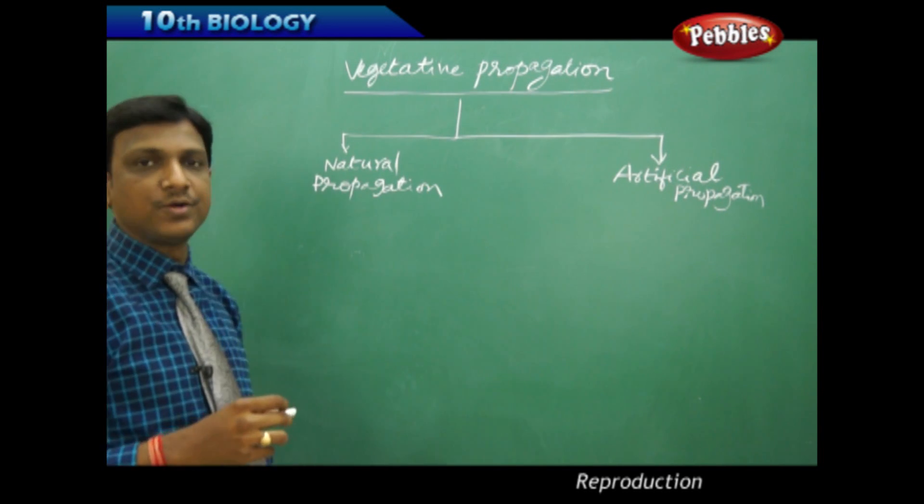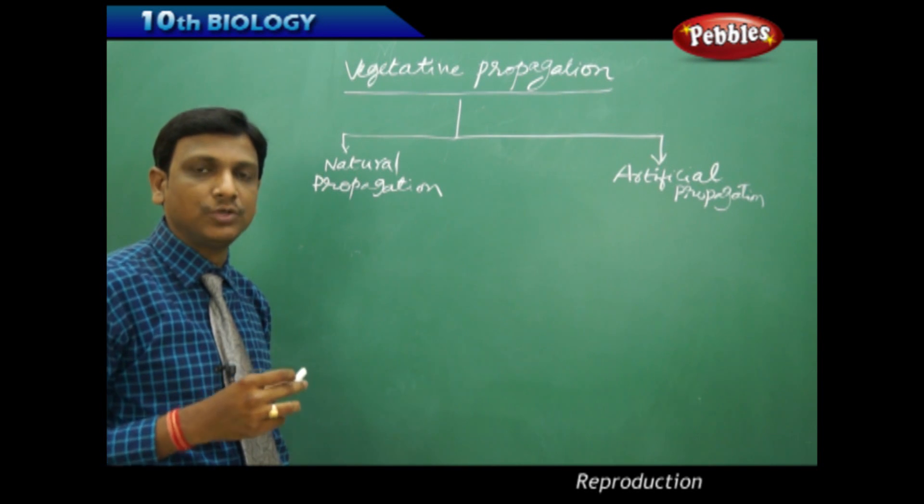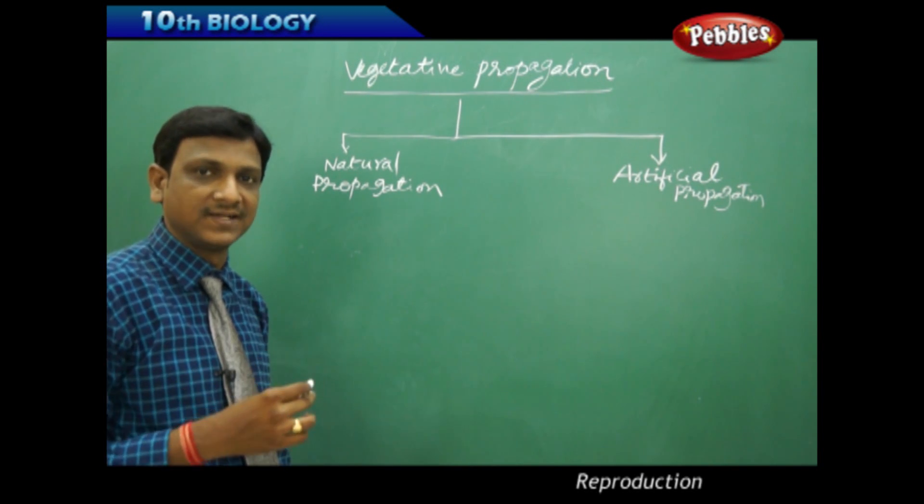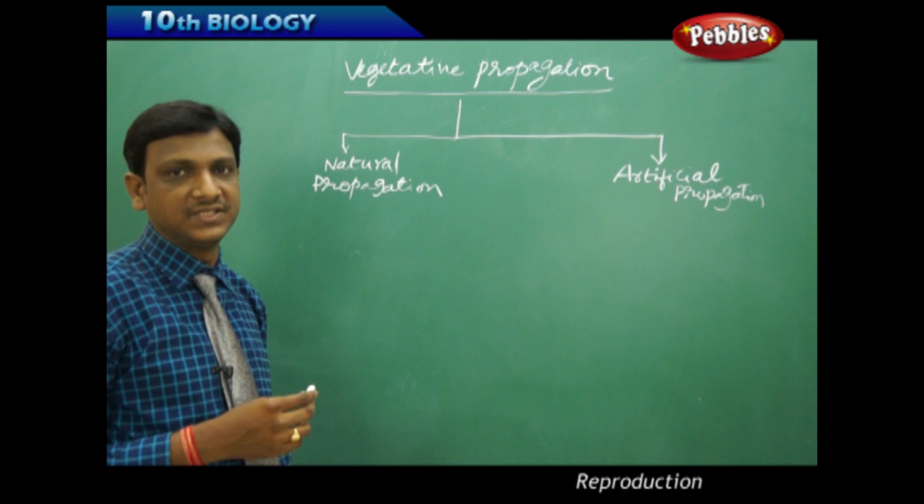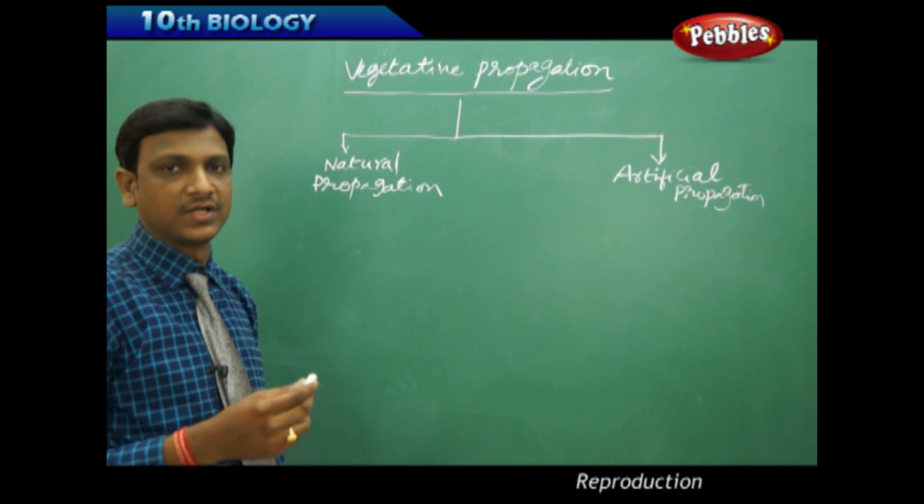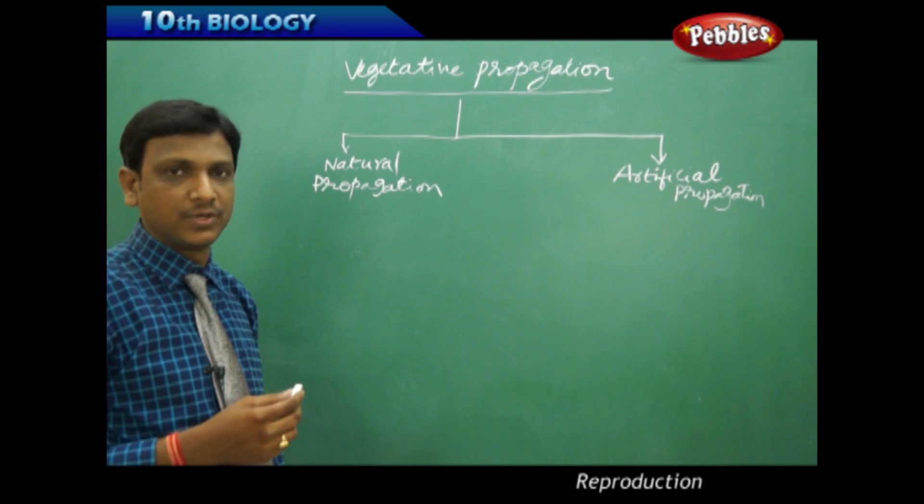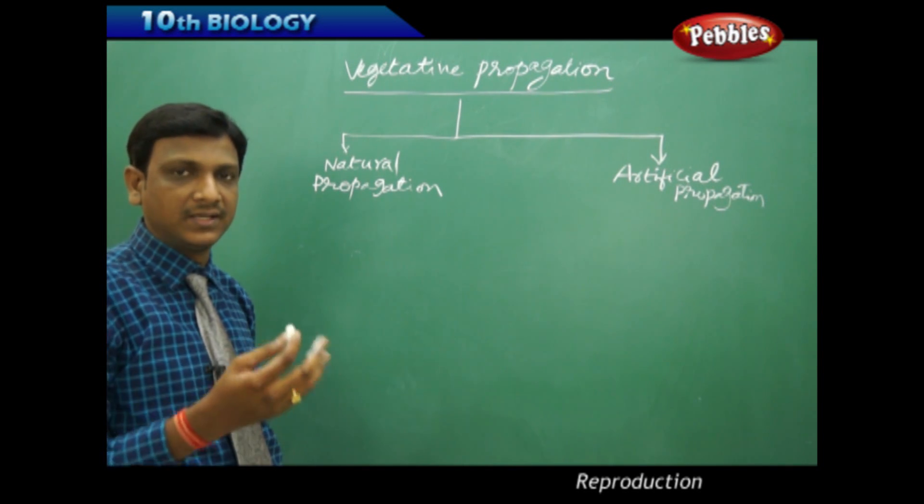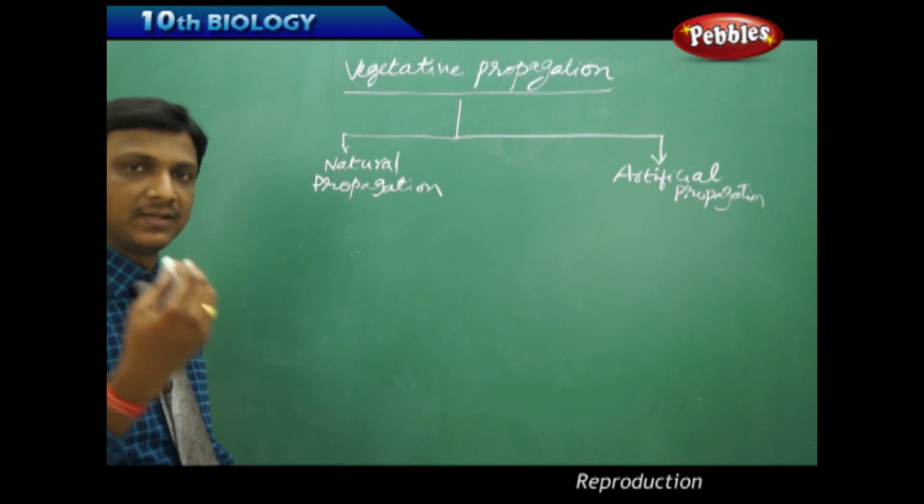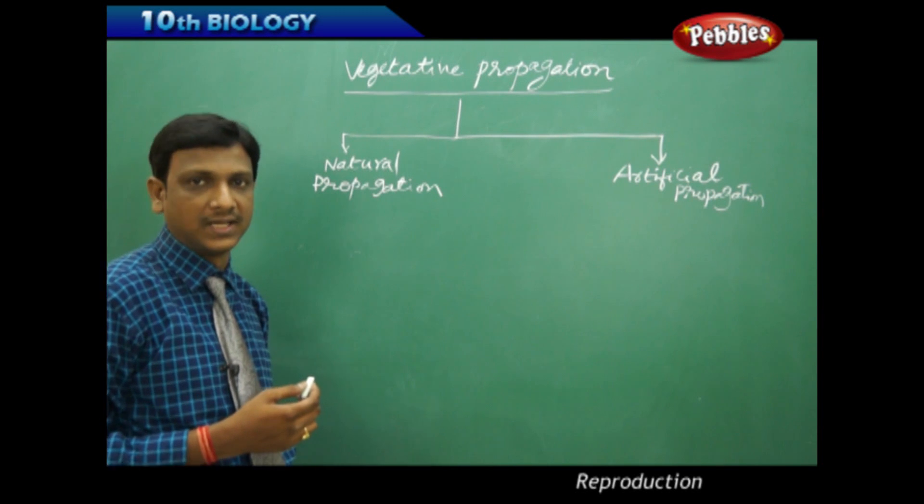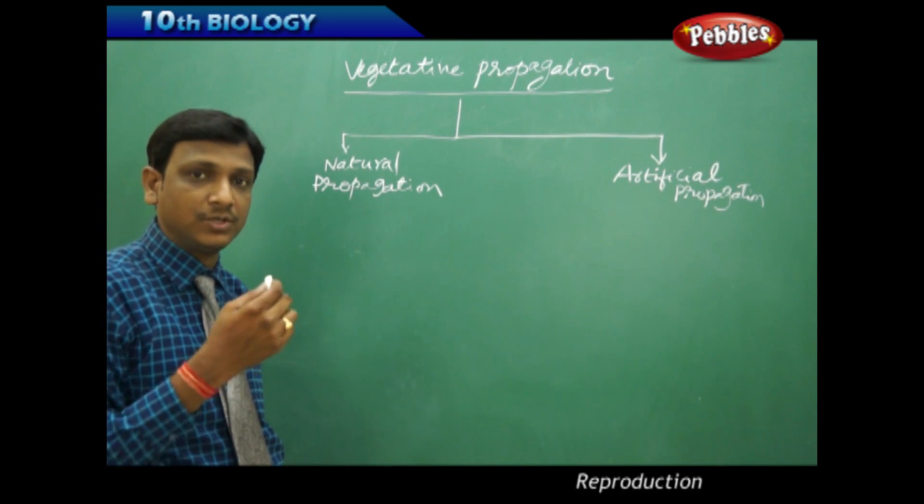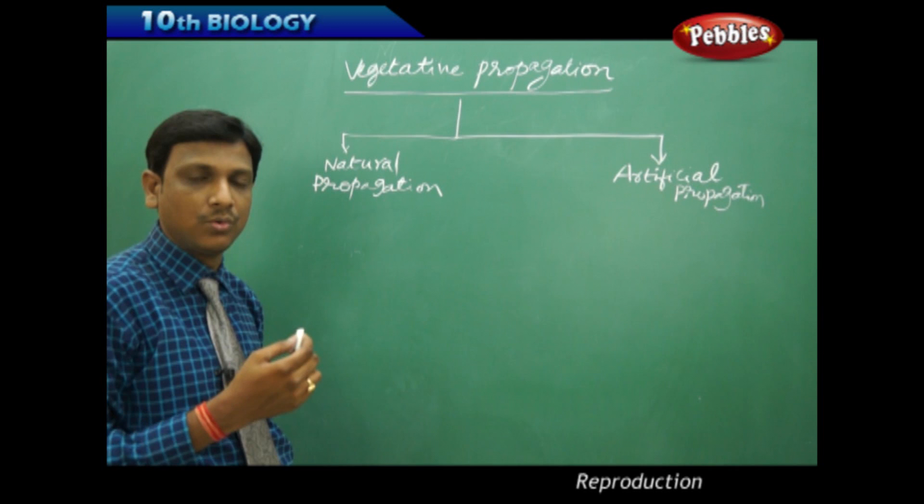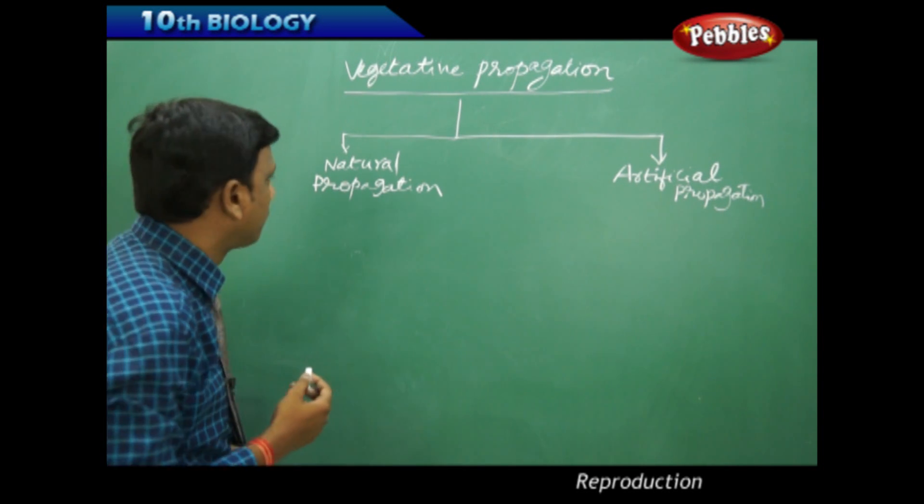In vegetative propagation, the plant is able to produce new plants or the young generation from any of its vegetative parts. Vegetative parts are different from reproductive parts. The flower is the reproductive part consisting of stamens and carpel, but if a plant is able to reproduce from its leaf, root, or stem, you call it vegetative propagation.